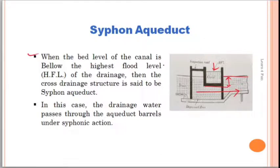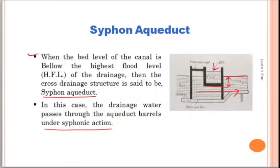The definition: when the bed level of the canal is below the highest flood level of the drainage, the cross drainage structure is said to be a siphon aqueduct. In this case the drainage water passes through the aqueduct barrels under siphonic action during the rainy season when the drain runs full, and when it crosses the canal the water under the canal passes under siphonic action.